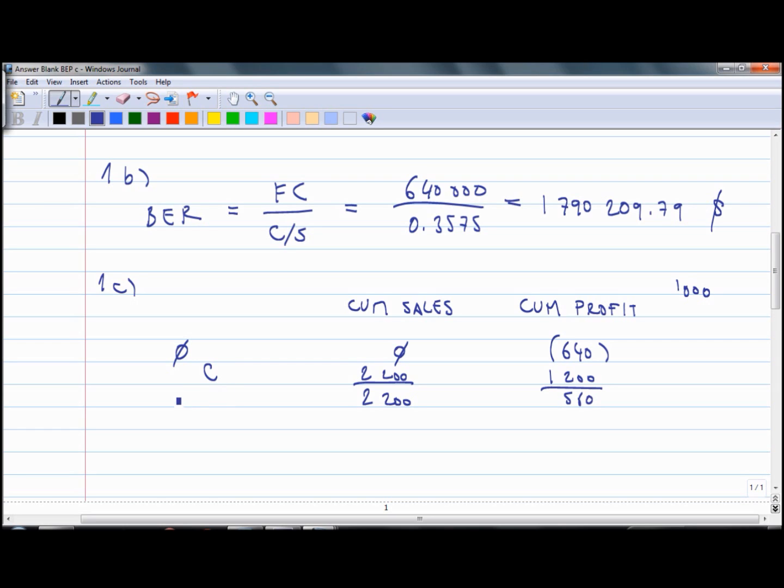We will then sell product S which is the second highest contribution to sales ratio. It generates sales of 3,520,000 and contribution of 1,232,000. That will give me the cumulative sales of 5,720,000 and cumulative profit of 1,792,000. That will give me the second point on my graph.